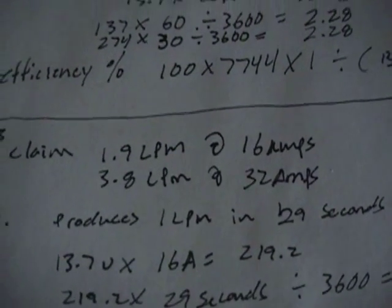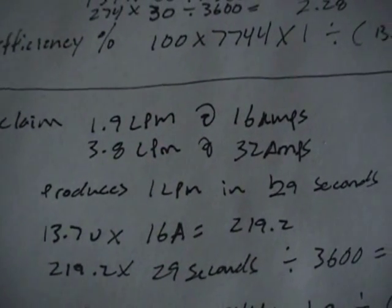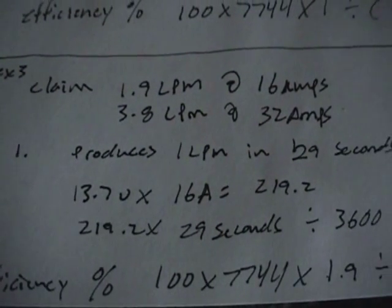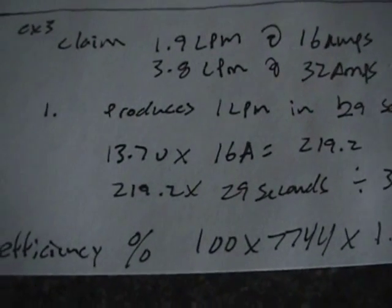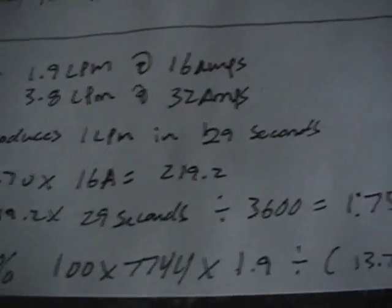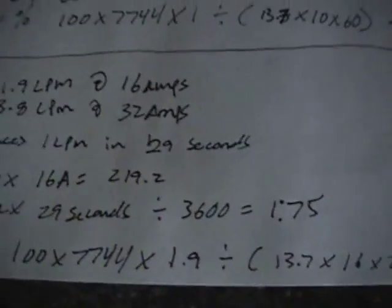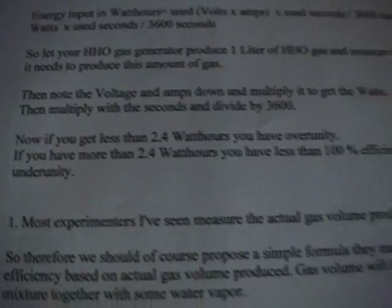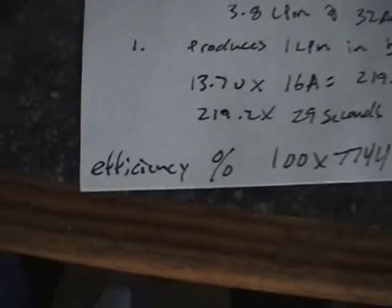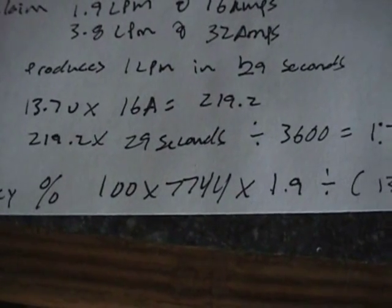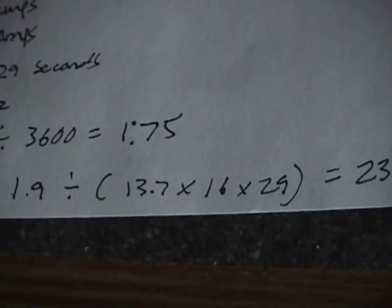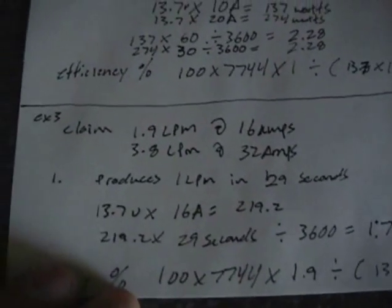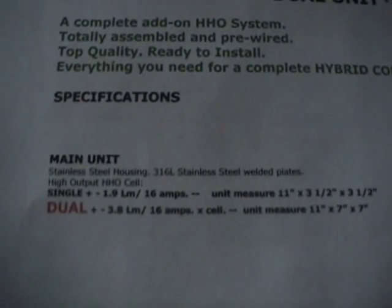The first unit produces 1.9 liters per minute in 29 seconds. 13.7 volts — that's a car charging system — times 16 amps is 219.2 watts. 219.2 watts times 29 seconds divided by 3600 is 1.75 watt-hours. So again, they're under the 2.4 watt-hours threshold — meaning over unity, more than 100% efficient. The efficiency percent: 100 times 7744 times 1.9 divided by 13.7 times 16 times 29 equals a whopping 231% efficient. That's basically a flat out lie, and obviously they're doing it to sell units.